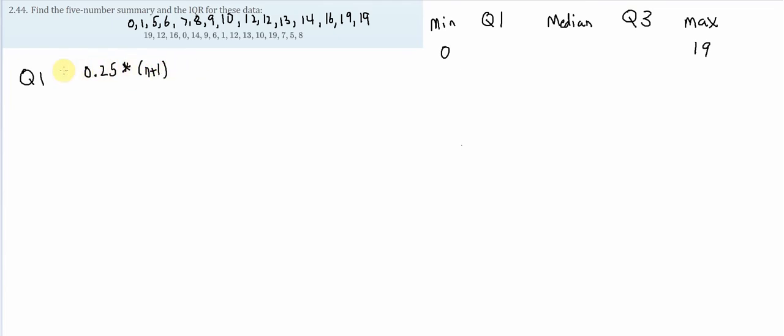the formula 0.25 times n plus 1. So what's important is this isn't Q1. This is actually the position for Q1, which I'm going to call A. So A is equal to 0.25 times n plus 1, which in this case there are 15. So that is 0.25 times 15 plus 1, which is the same as 0.25 times 16, which is 4.